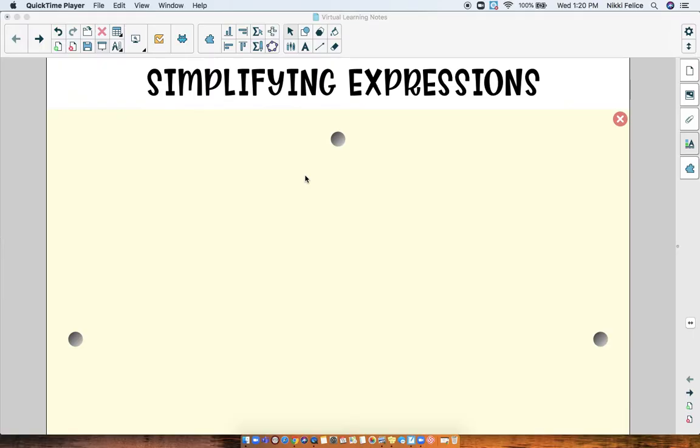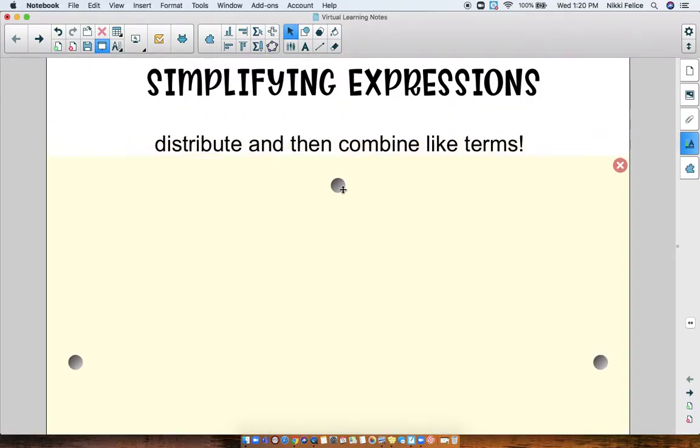So this is something that you actually already know how to do because it combines both distributing and combining like terms. When we simplify expressions, we do that first by using the distributive property and then if there are any like terms in the expression, we can combine them. So let's take a look at our first example. I'm going to need you guys to have a notebook and a pencil so that you can copy down these examples as we go through them together.